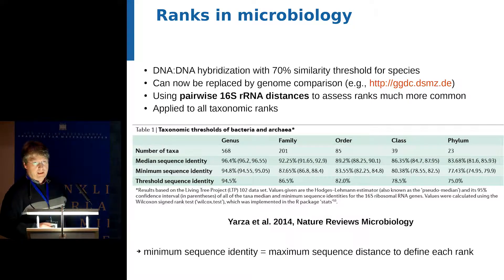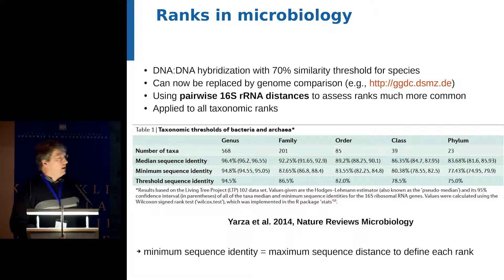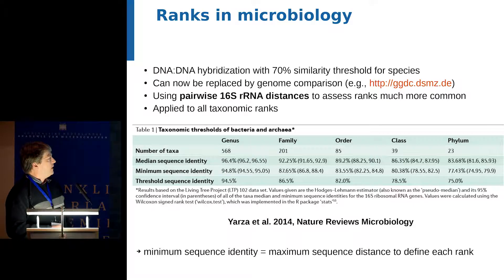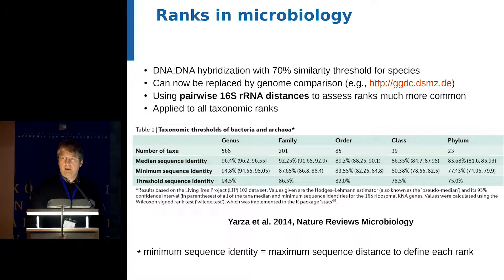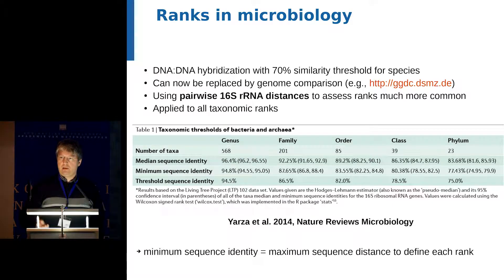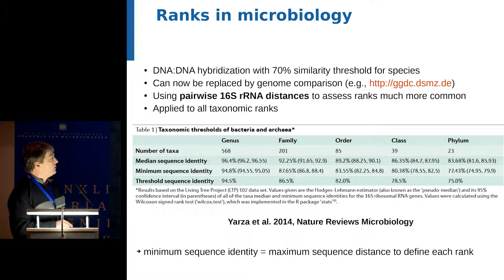Much more frequently used, because it is easier and can be applied to more ranks, is 16S rRNA sequencing. Indeed, microbiology started to require 16S rRNA sequences with each new species description long before the barcoding projects started for eukaryotes. A very recent paper in Nature Reviews Microbiology reviewed the entire topic and defined minimum sequence identities — or maximum sequence distances — for each taxonomic rank: genus, family, order, class, phylum. 16S is not particularly reliable at the species rank, but thresholds for all other ranks have been introduced, estimated from the existing taxa.